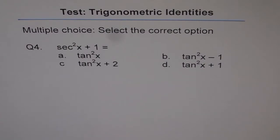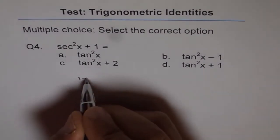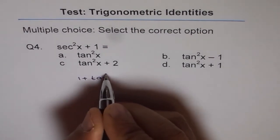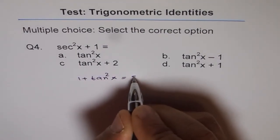I hope you remember the Pythagorean identity which is 1 plus tan square x equals secant square x.